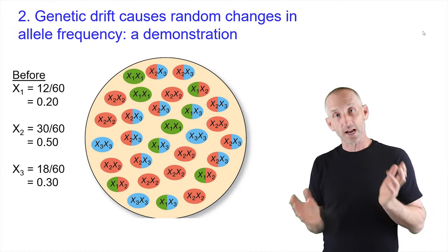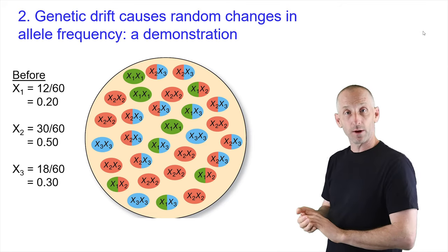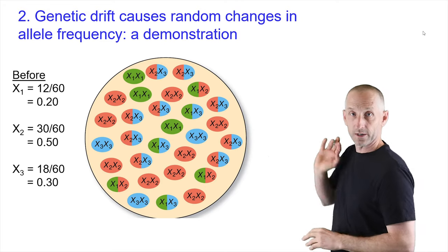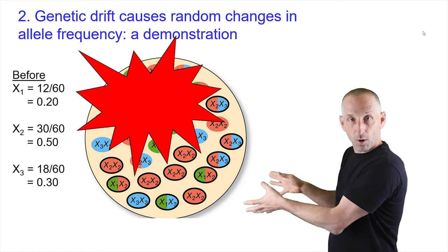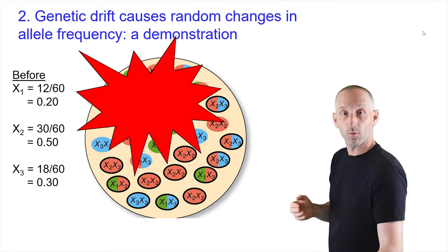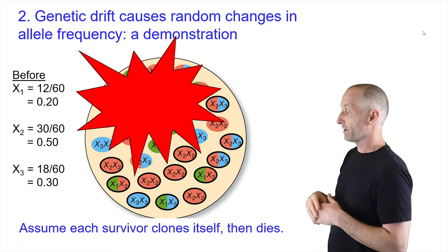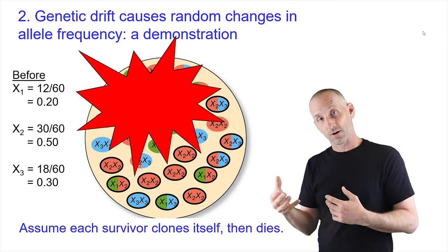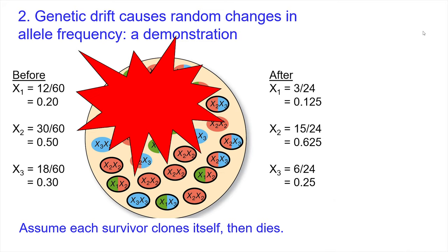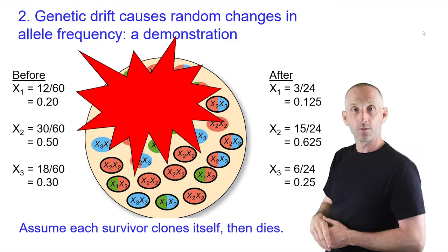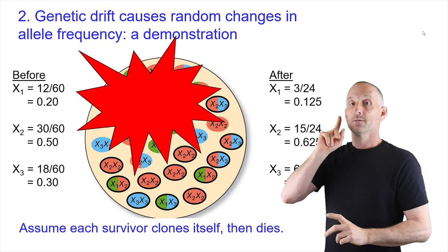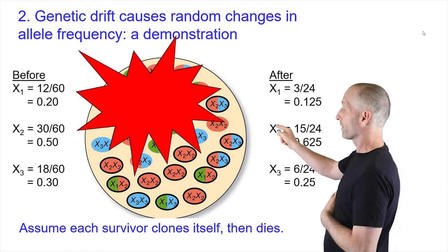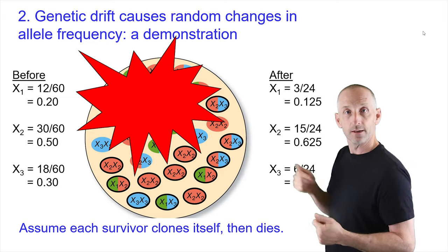However, large-effect beneficial mutations do occur, such as the classic industrial melanism in peppered moths. Now, how do allele frequencies generated by mutation change within populations? The first mechanism is genetic drift, which generates random changes in allele frequency. Consider the population with starting allele frequencies — a meteorite comes down and kills some of them at random. Each survivor clones itself. Counting up the survivors: 3 x₁, 15 x₂, and 6 x₃ out of 24 total. The frequency of each allele has changed within the population — that's evolution — but it was completely random, having nothing to do with whether they were x₁, x₂, or x₃.